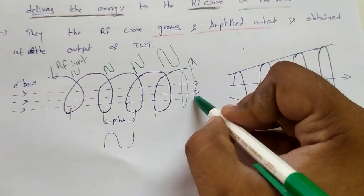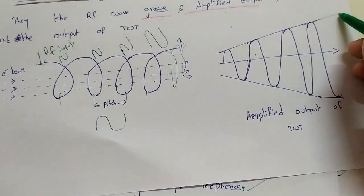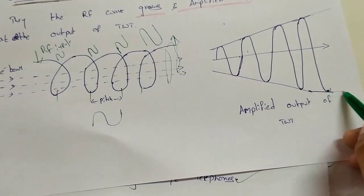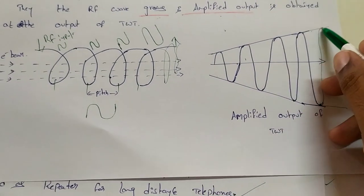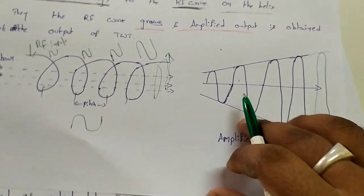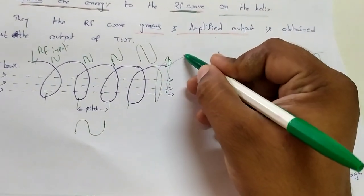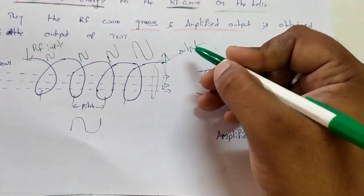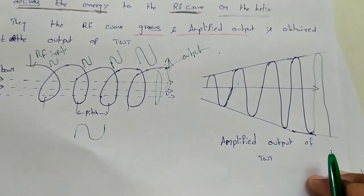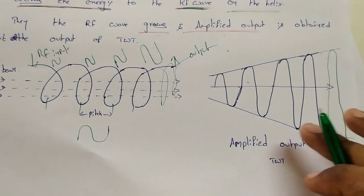The wave gets increased as it travels and we get the amplified output at the other end. This is the operation of the TWT.